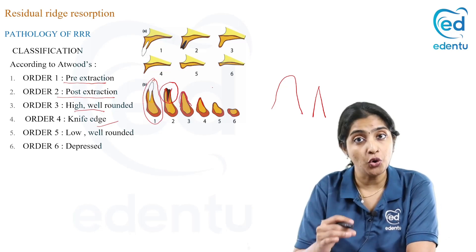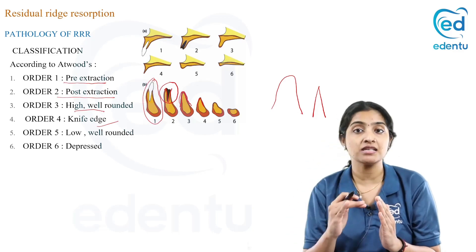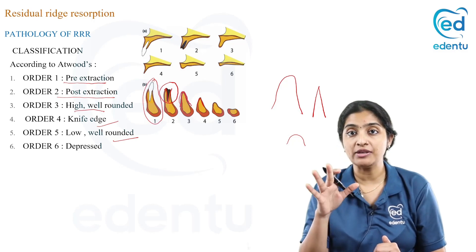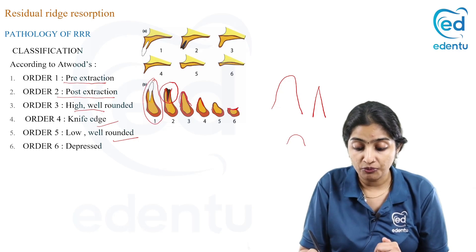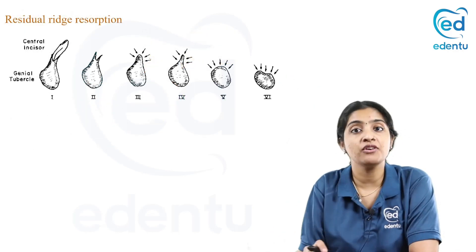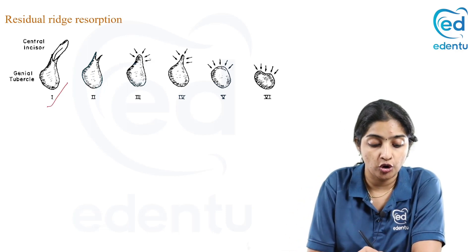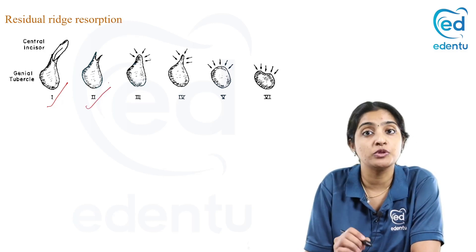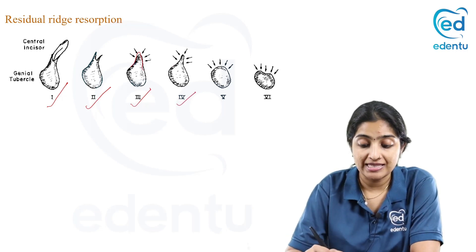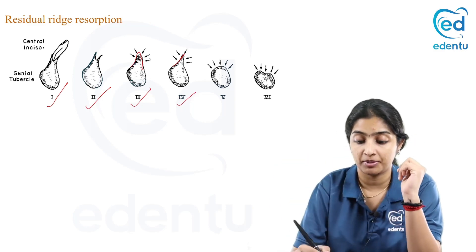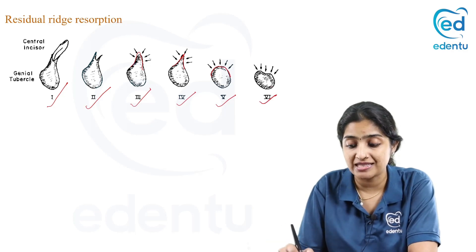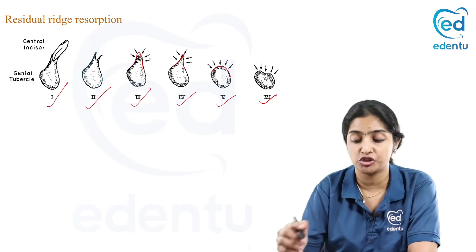Order five is low and well-rounded — the height is compromised but the width is intact. Order six follows, where a depression forms as both height and width are lost. To revise: order one is pre-extraction; order two is post-extraction; order three is high and well-rounded; order four is knife-edge (width compromised, height intact); order five is low and well-rounded (height compromised, width intact); and order six shows a depression where both height and width are lost.